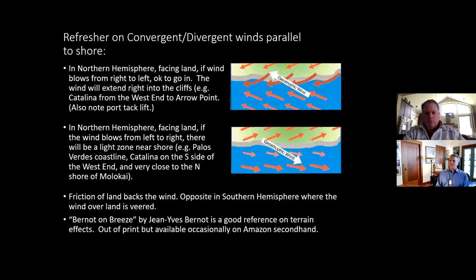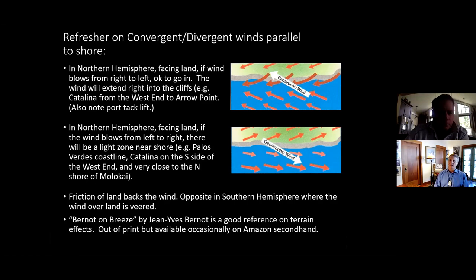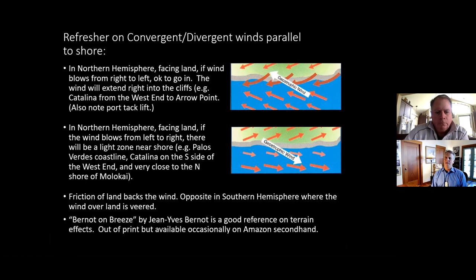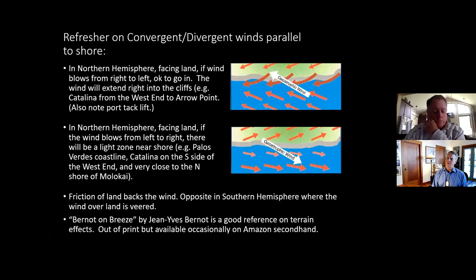In the Northern Hemisphere, if you're facing land and the wind is blowing from left to right, there'll be a light zone right along the shore. You see that on the Palos Verdes coastline, the south side of Catalina, and on the north shore of Molokai — which we'll discuss for the approach. Playing Molokai gives you accelerated breeze, but if you get too close you'll find that light airstrip right along the beach. The friction of land backs the wind; it's the opposite in the Southern Hemisphere. 'Breeze on Breeze' by Jean-Yves Bernell is a great little book on terrain effects, and David Birch, John Jordan, and Alan Watts also have good weather books.